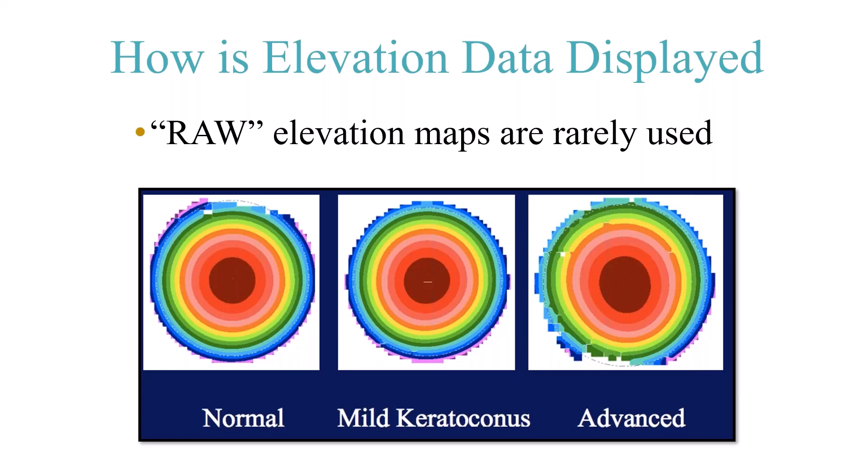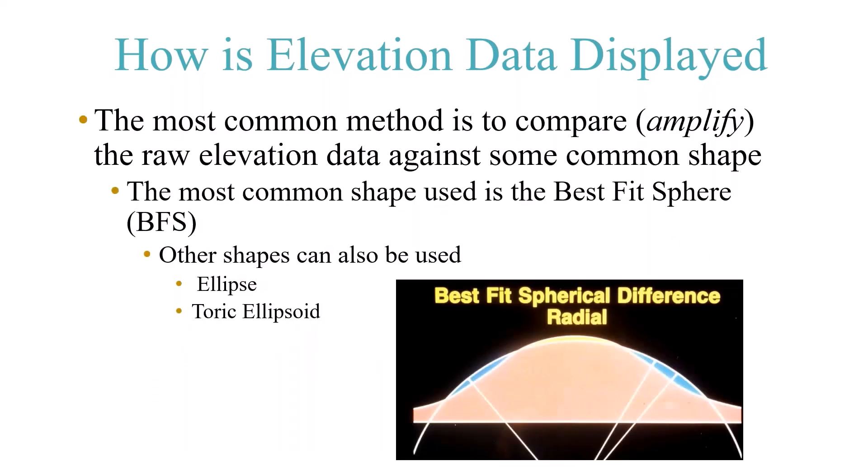No matter how advanced the cone, if you were to lay someone down and look up at the ceiling, the apex is always going to be the high point. So how do we display elevation data to make it clinically useful? The most common method is to compare — really amplifying the raw elevation data against a common shape. The most clinically relevant shape for screening is a best fit sphere. The shape used doesn't affect accuracy but changes appearance.